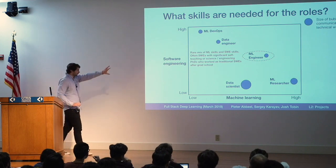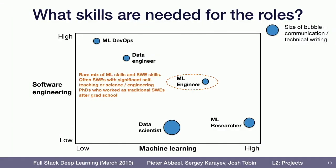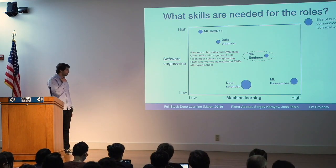Machine learning engineer is, according to a lot of people we talk to, a rare unicorn-type role to hire for. It requires a rare mix of deeply understanding machine learning and being able to train state-of-the-art models, but also enough engineering skill to make those models work with the rest of the codebase and the company's workflow. Many people told us this is actually the hardest role to hire for, and there's a pretty wide range of backgrounds that perform this role.